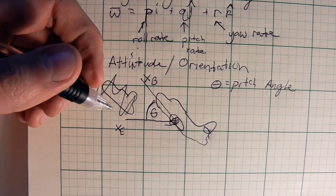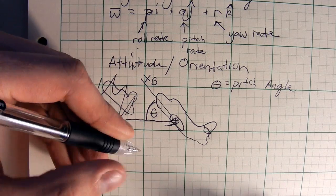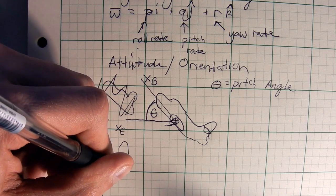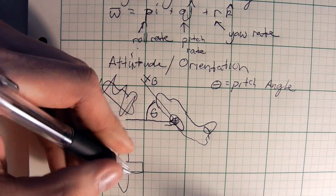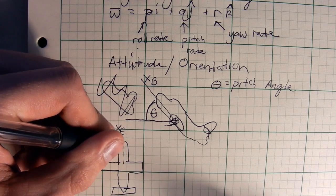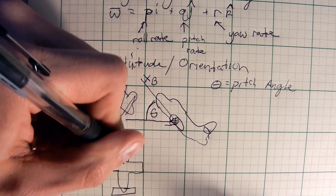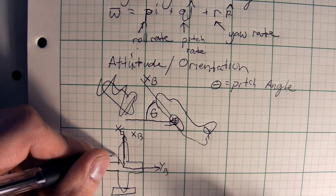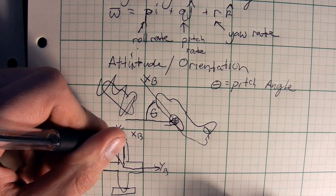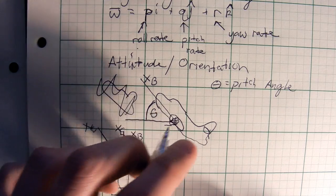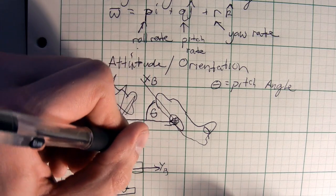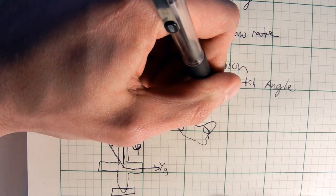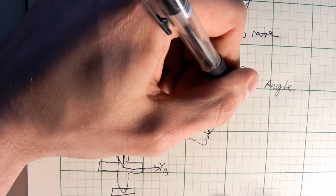We'll draw another airplane from an above view to show the yaw angle. We have the x-axis and y-axis in the body frame, and the x-axis in the earth frame. This angle between them is known as the yaw angle, denoted as psi.